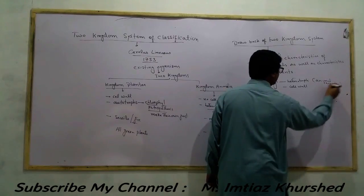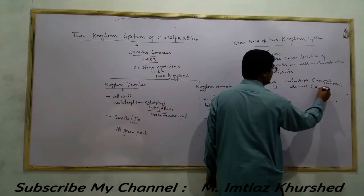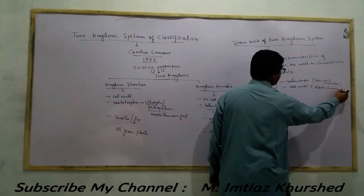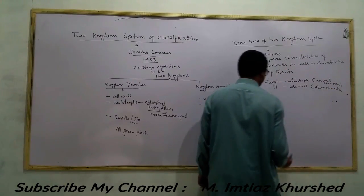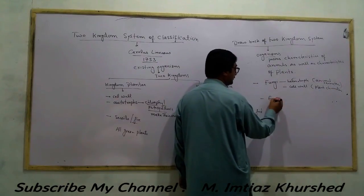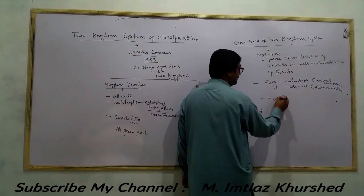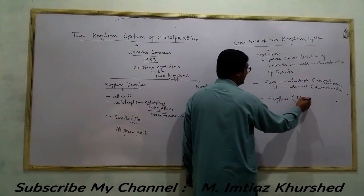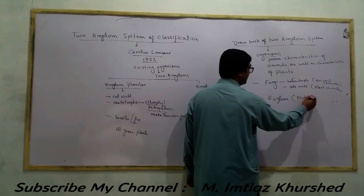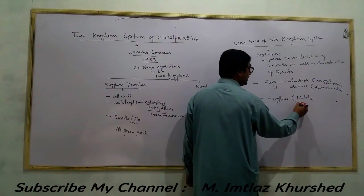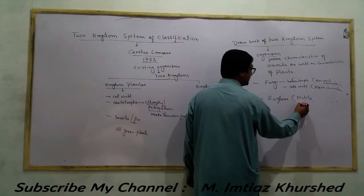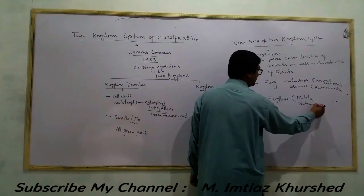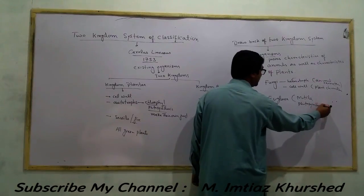For example, Euglena is motile, which is an animal character, but it also performs photosynthesis, which is a plant character.